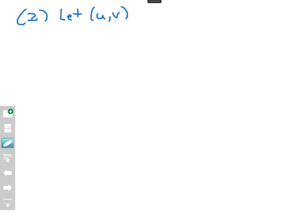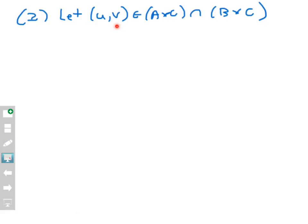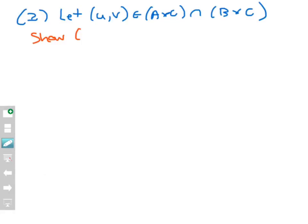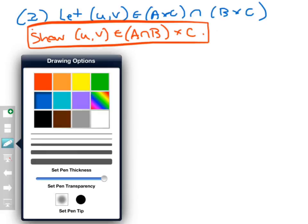Now let's move on to prove the converse. I'm going to let U comma V be an element of A cross C intersect B cross C. Again, this is an ordered pair — I know it has to be because it's going to be in two Cartesian products simultaneously. It's an intersection of two Cartesian products, so the element must be an ordered pair, not just a single variable. What I want to show — let me write this in red so I know I'm not allowed to assume it — is that U comma V belongs to A intersect B cross C.